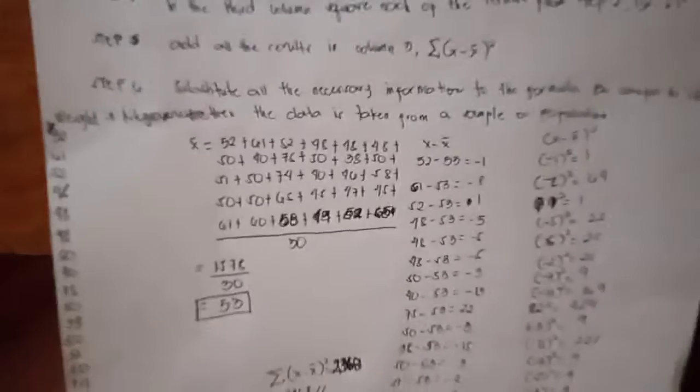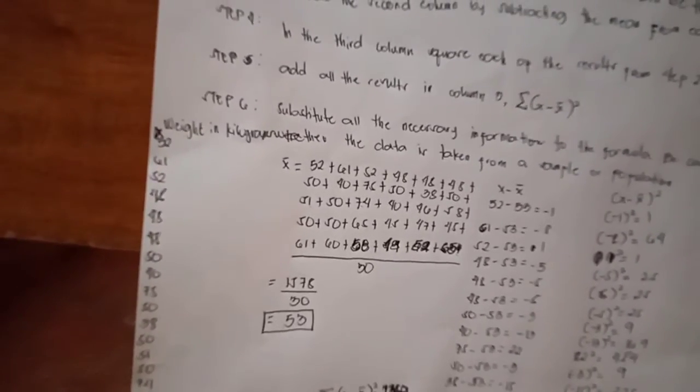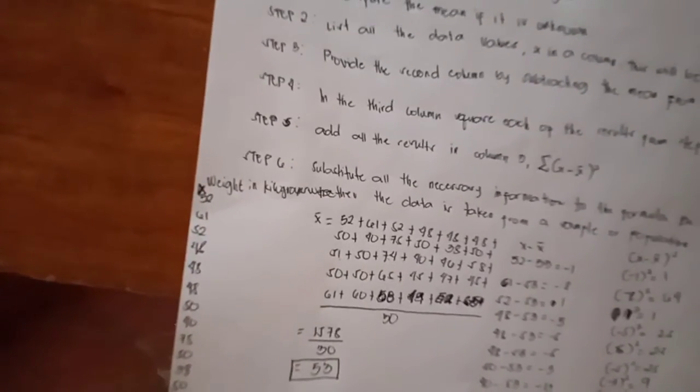For the second step, we need to copy the data values in a column. This will be our first column and we will mark it as x. We have to copy the data values and we will mark it as x.